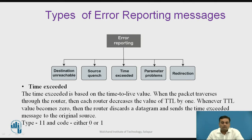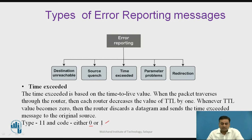When the Time Exceeded message is generated due to the Time to Live field reaching zero, the code field of the ICMP message contains value 0. When one of the fragments does not reach the destination within the set time interval and a Time Exceeded message is generated, the code field of the ICMP message contains value 1.